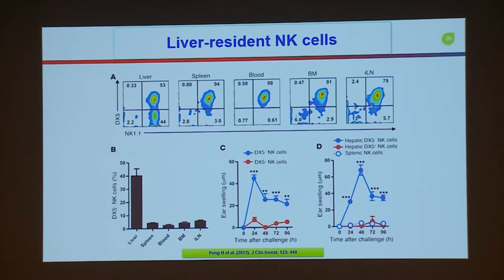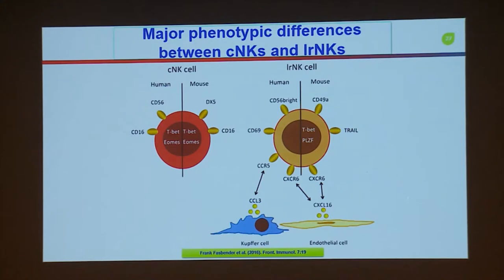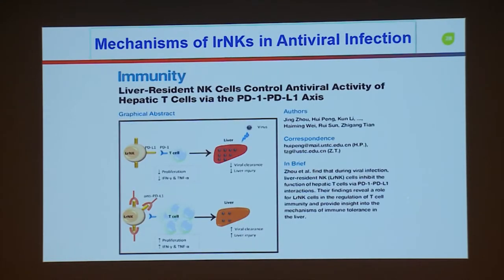A 2013 paper published in JCI showed very clearly that only in the liver there are resident NK cells that are DX5-negative and NK1.1-positive, but not in the spleen, blood, bone marrow, or lymph node. In humans, different markers are used but we can still find liver resident NK cells — something like CD56 bright, expressing CD69 and also CD16. A paper published this year from the same group found that in viral infection, liver resident NK cells can control antiviral activity through the PD-1 and PD-L1 pathway.